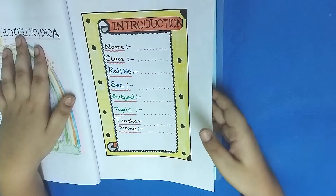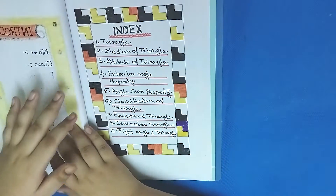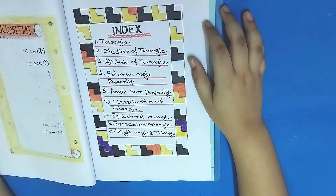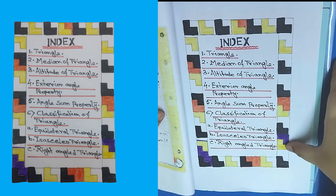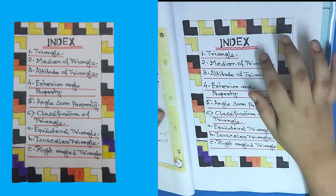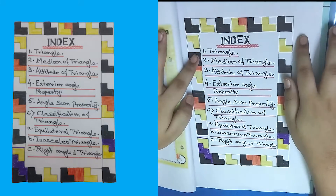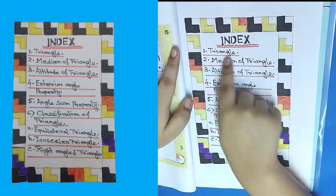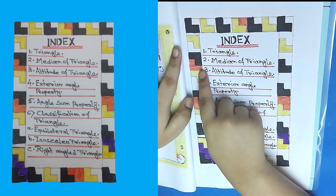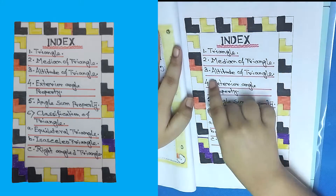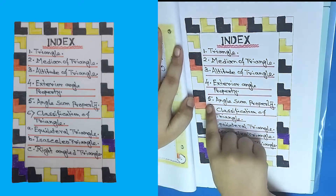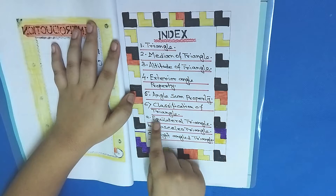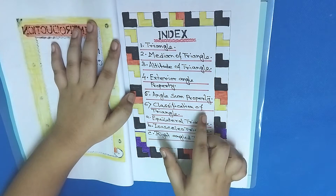Next page — the index. This is my favorite part. I've neatly decorated the border and here are the points we have: 1. Triangle, 2. Median of triangle, 3. Altitude of triangle, 4. Exterior angle property, 5. Angle sum property, and 6. Classification of triangle — three parts.